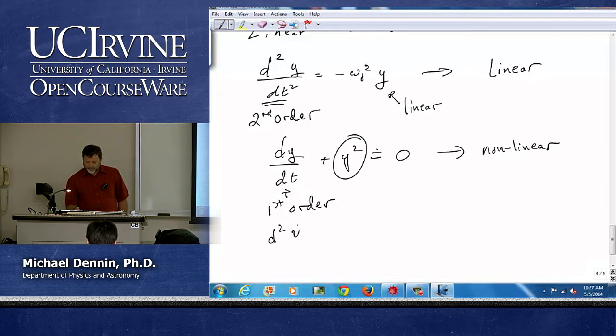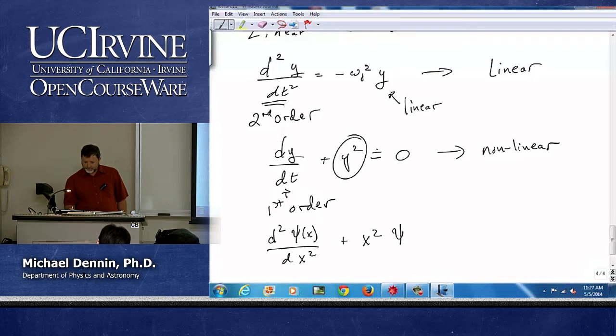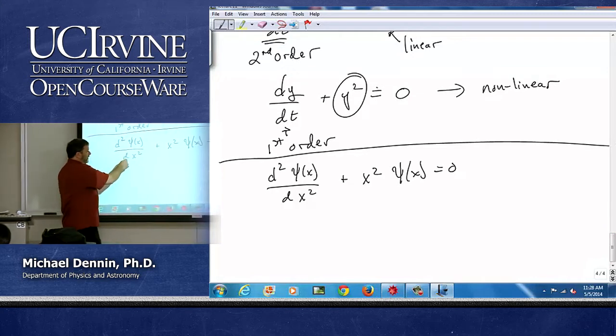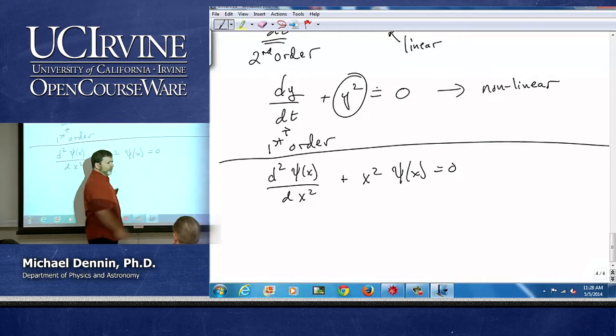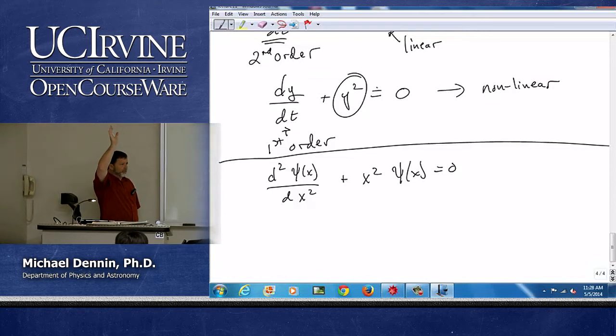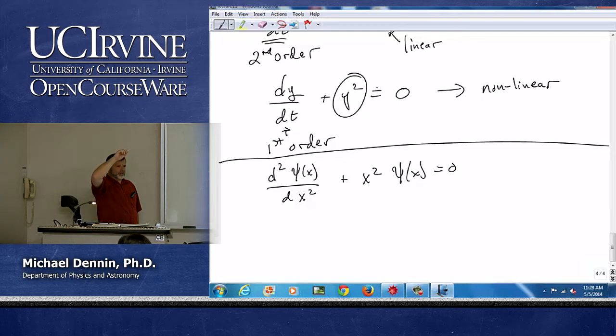Now, what about this equation? Linear or nonlinear? d²ψ/dx² plus x² ψ(x) equals zero. Nonlinear. Linear. Who's voting for linear? Who's not sure? Is it a good time to turn to your neighbor? Find out what they thought and why. Go.